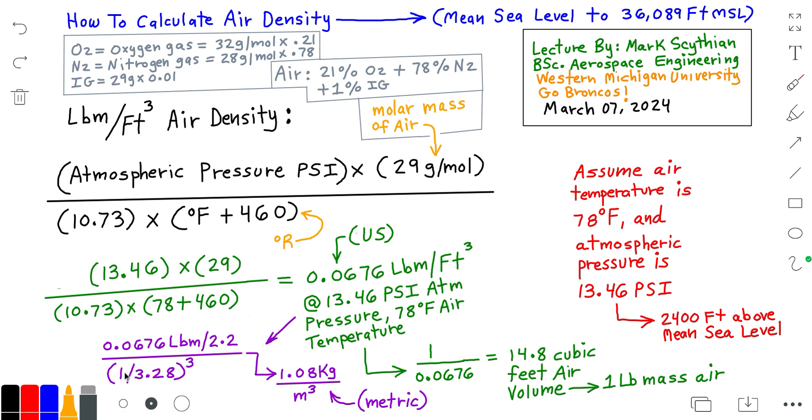This quantity ratio taken to the third power or cubed will yield 1.08 kilograms per cubic meter, the equivalent air density in the metric system congruent with 0.0676 pounds per cubic foot air density in the U.S. system of measure.